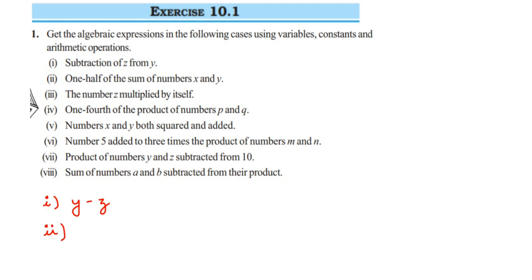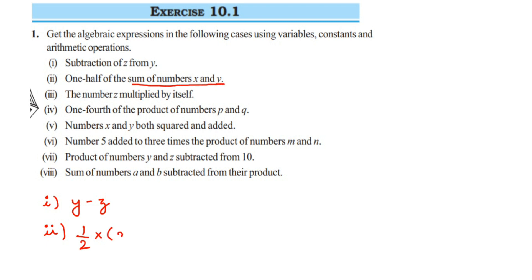The second question: one half of the sum of numbers x and y. Sum means addition, so we add x and y. 'Of' means multiplication, and half means 1 by 2. So the expression is 1/2 multiplied by (x + y), or written as 1/2(x + y).